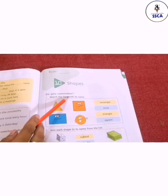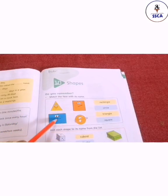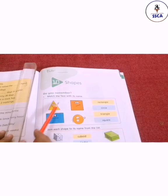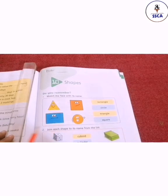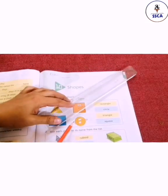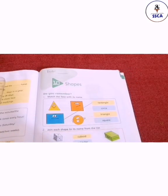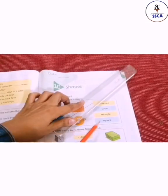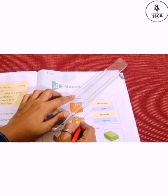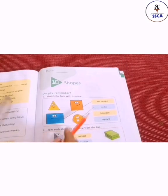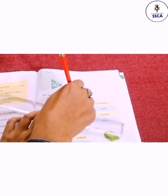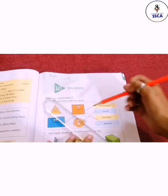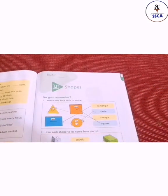The question says: match the face with its name. We have to match each shape to its name. Take out your ruler. First is rectangle — match rectangle here. Second is circle — match circle here. Third is triangle — match triangle here. And the last is square — match square here. That question is complete.